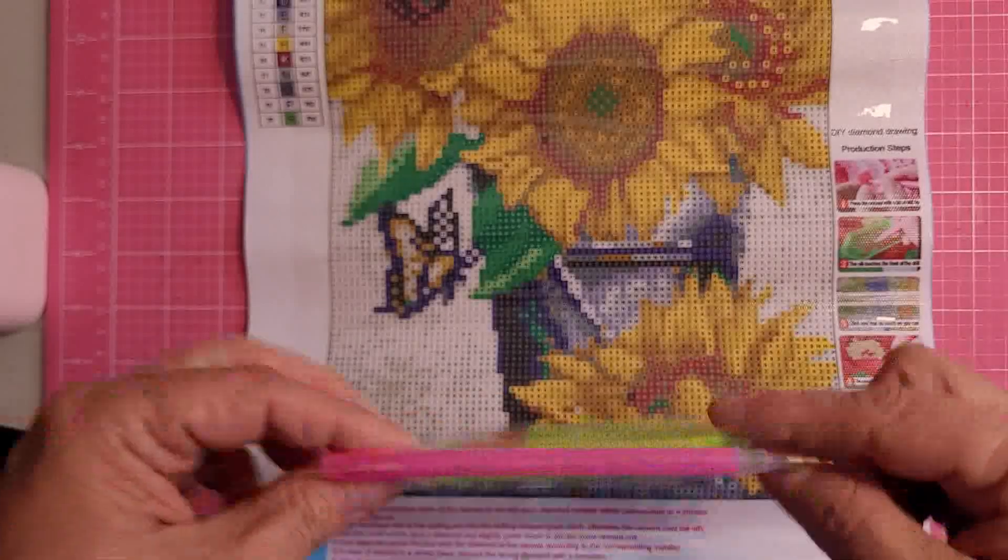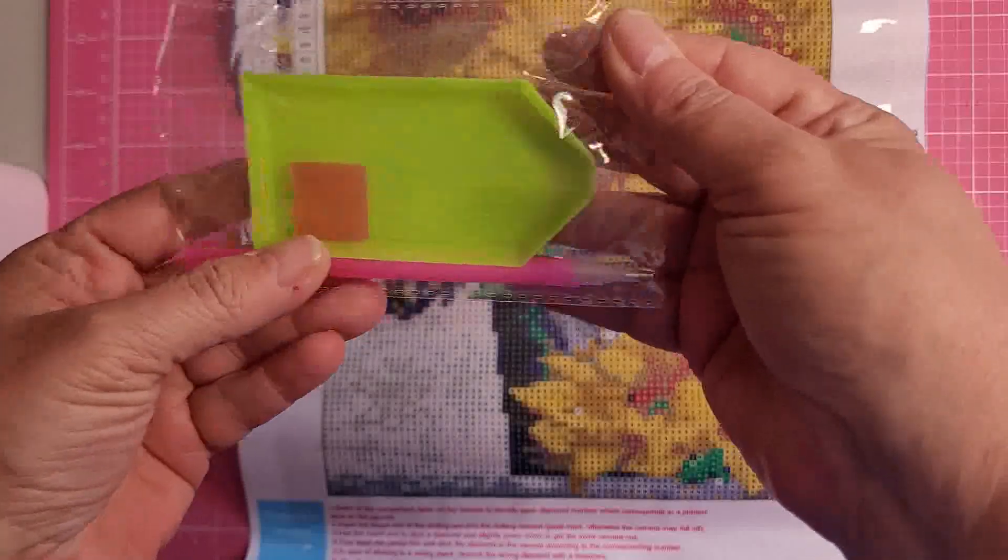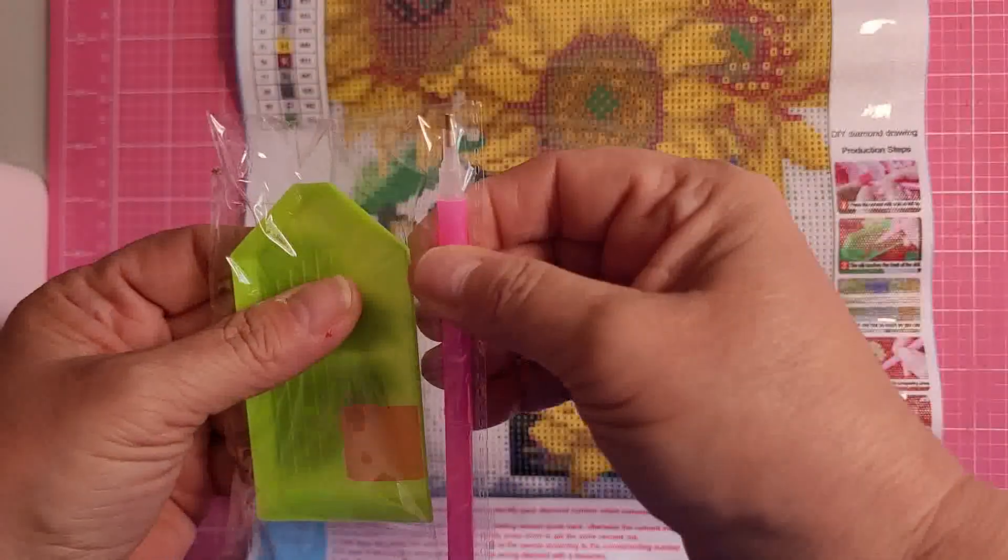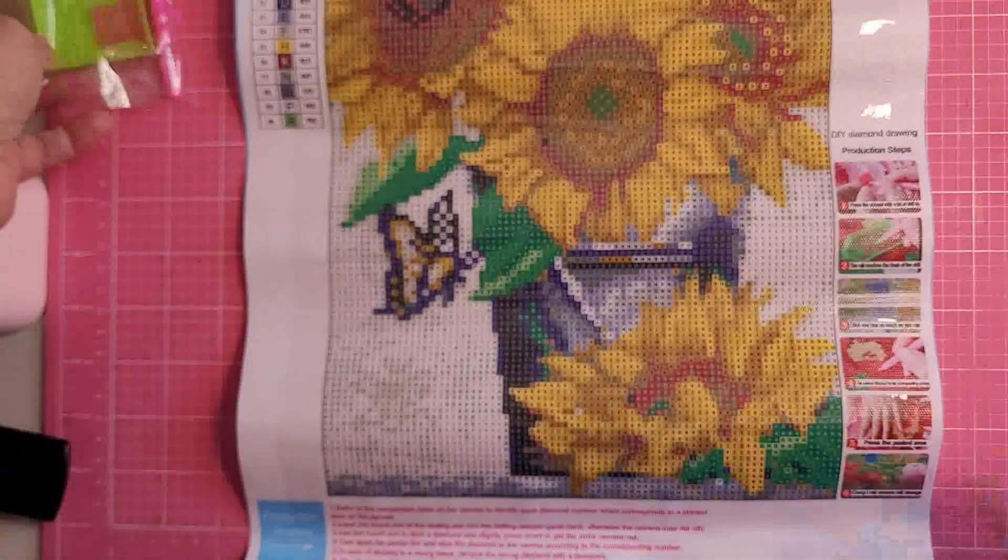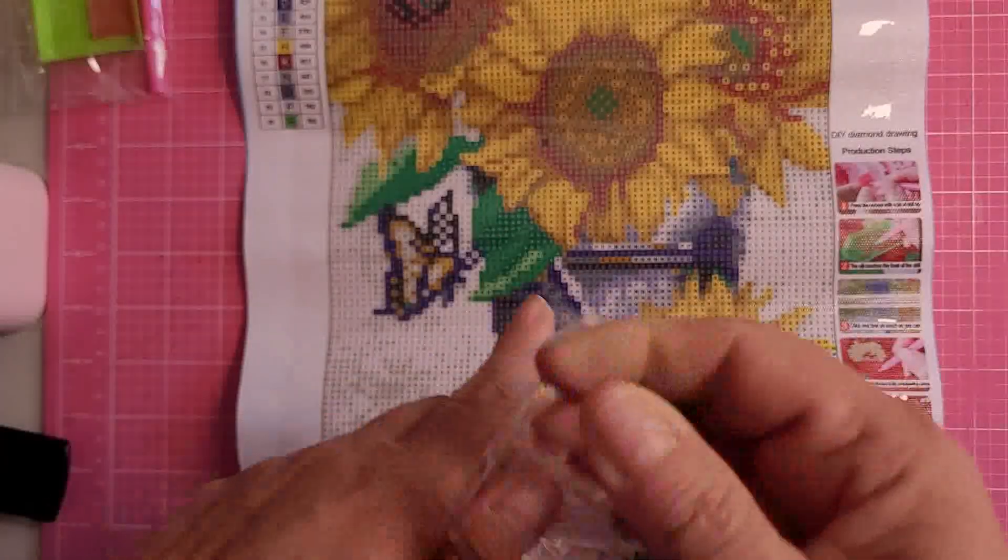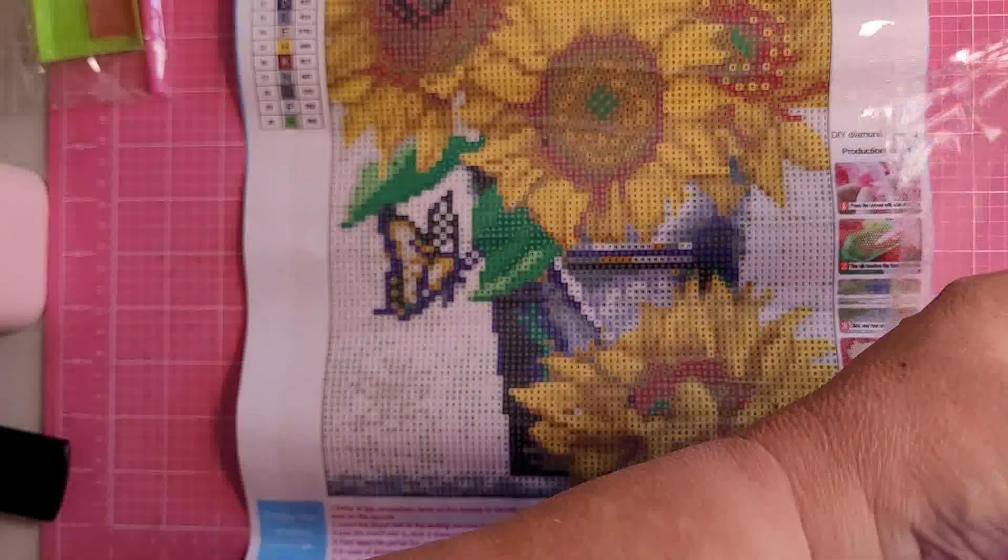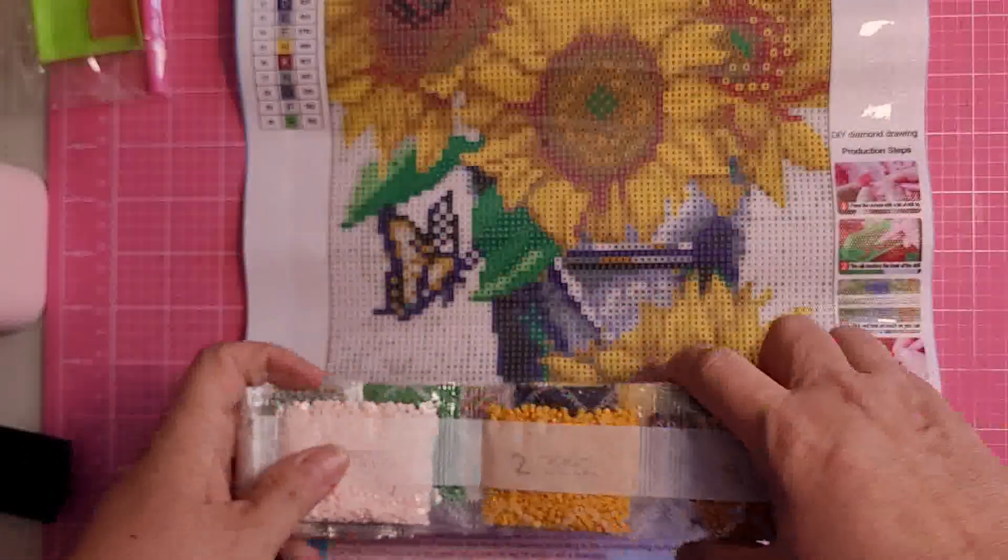And here's what came in the box. I got another tray, another wax, and another stylus type pen, and then these are the drills. I'm sorry if you hear the dogs barking in the background, my daughter is moving and they are going in and out of the door.